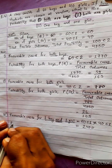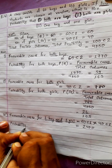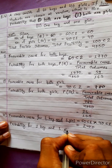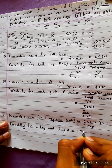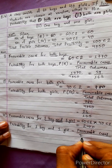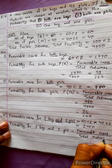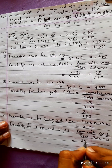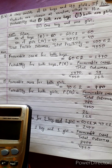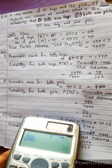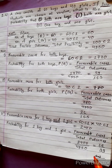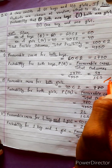Time to find probability for one boy and one girl. The formula is favorable cases upon total outcomes. Favorable cases are 2400 upon total outcomes 4950. Dividing gives 16 by 33. All three answers have been verified and are correct.